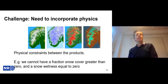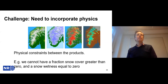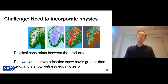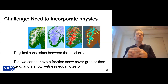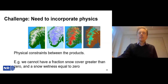There is also the need to incorporate physics. Many models are physics-based, and there are physical constraints between products — for example, in snow monitoring, if the fractional snow cover is zero, there is no need to estimate snow wetness or grain size, these should also be zero or not calculated. It is not easy to build physical constraints into the network architecture — there are many variations of the physics and how they can be applied.